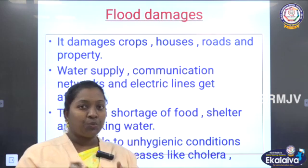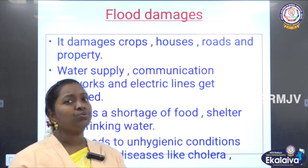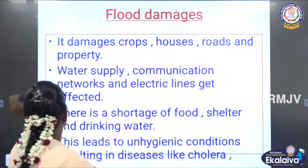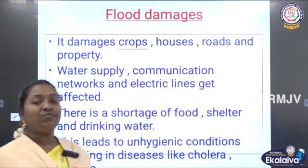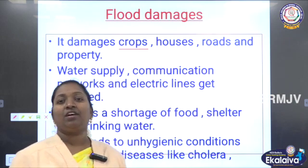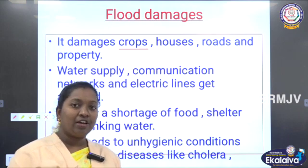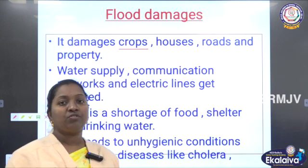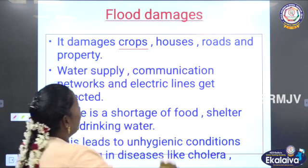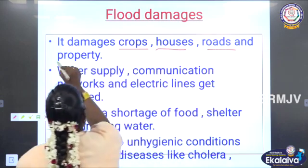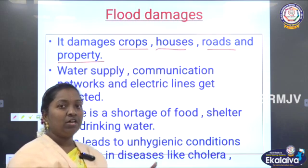Natural disasters will destroy the things which are very near. When flood comes, what are the damages caused by the flood? It damages first crops. As we know, crops are very important — without food we cannot survive. We are mainly dependent on food as well as air. When flood comes it destroys crops, houses, roads and all properties.